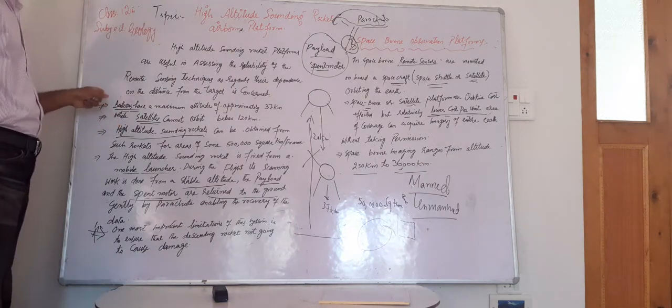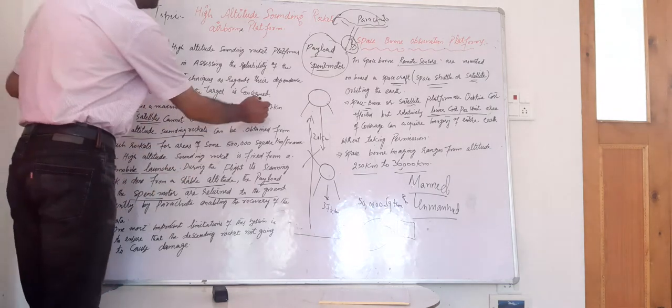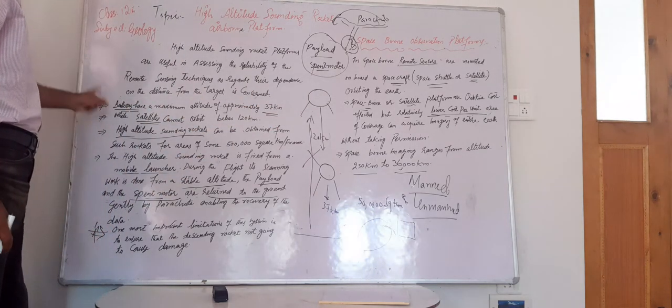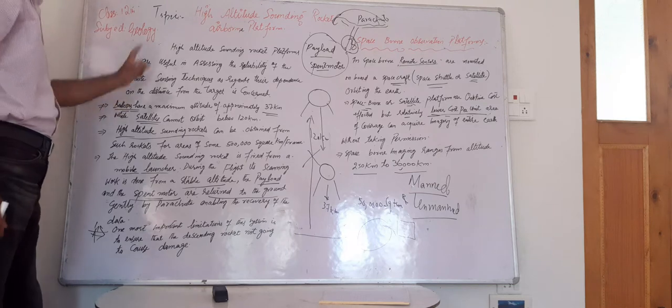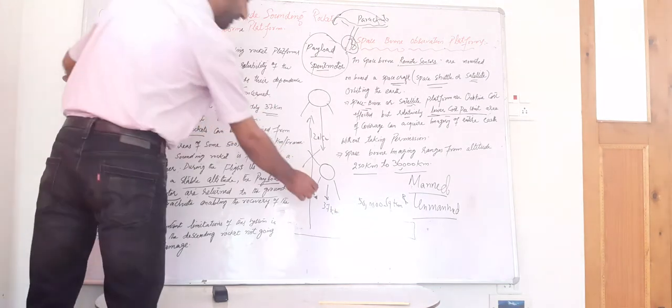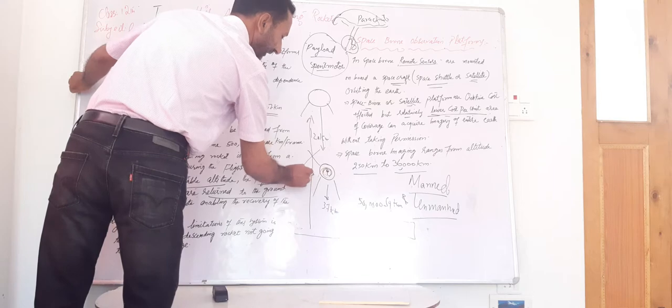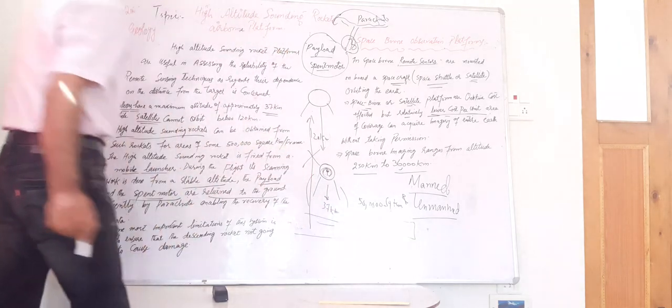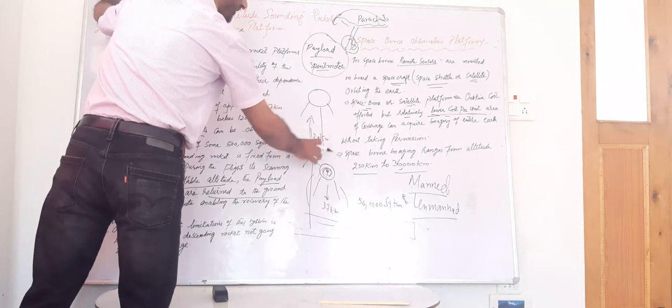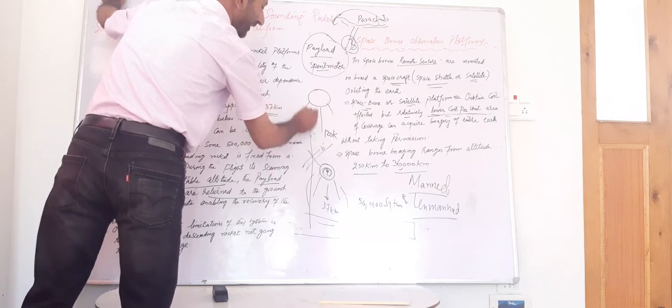We have already learned that balloons have a maximum altitude of approximately 37 kilometers, while spaceborne satellites cannot orbit below 120 kilometers. So when we use balloons, they can cover distances up to 37 kilometers, but when we use satellites, they cannot cover the area below 120 kilometers.